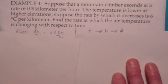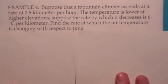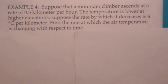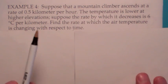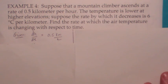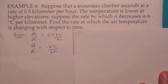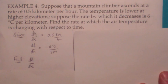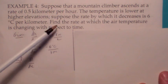Let's do a couple more. A mountain climber is climbing a mountain at 0.5 kilometers per hour — that's a derivative. If h is the height of the mountain climber, then dh/dt is 0.5 kilometers per hour. Meanwhile, the temperature is decreasing by 6 degrees Celsius per kilometer — that's a derivative too. If a is the air temperature, then da/dh is negative 6 degrees Celsius per kilometer. And what do they want you to find? They want you to find the rate at which the air temperature is changing with respect to time — they want you to find da/dt.